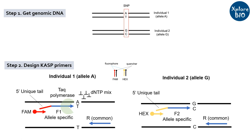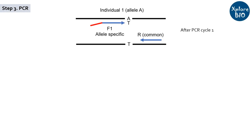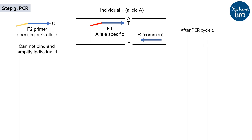Let me make it simpler for you. Here, PCR of individual 1 having allele A is shown. Forward primer specific for allele A — that is F1' — will bind to it, whereas F2' cannot. Why? Because at the 3' end it has a C, and for successful PCR amplification the primer should have an exact complementary nucleotide at the 3' end, which is true in the case of F1'. You can see in the picture that the red tail is not complementary to individual 1's DNA and hence it is not binding — it is just hanging there. This is how it looks upon amplification after PCR cycle 1.